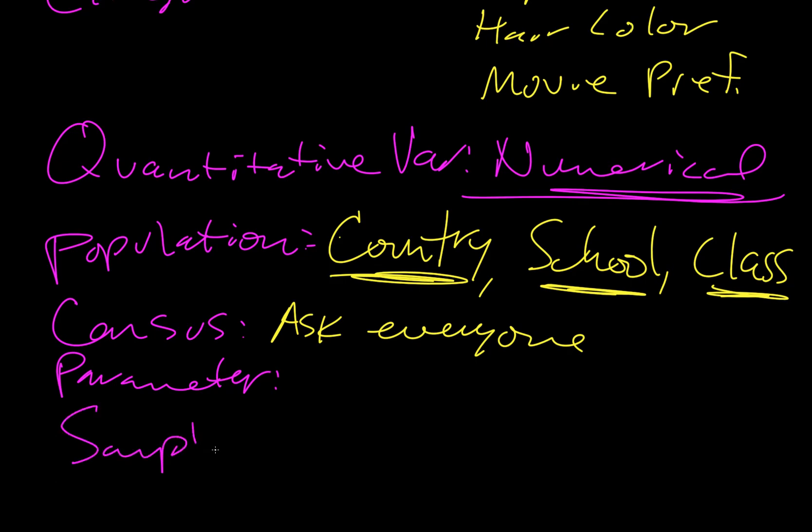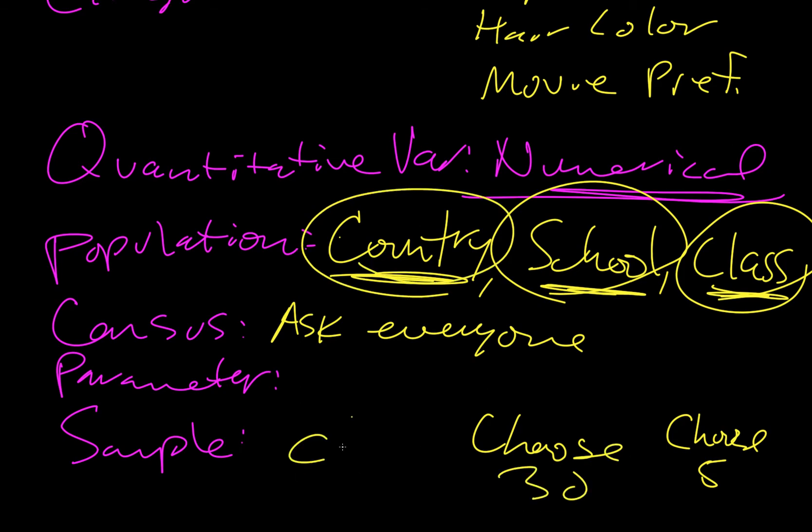Sample. A group of individuals selected from a population. So if our population was the class, maybe we'll only choose five. Now if it's the school, maybe we'll choose 30. If it's the country, we should choose 2,000 or something. So we're just going to choose a portion of that.